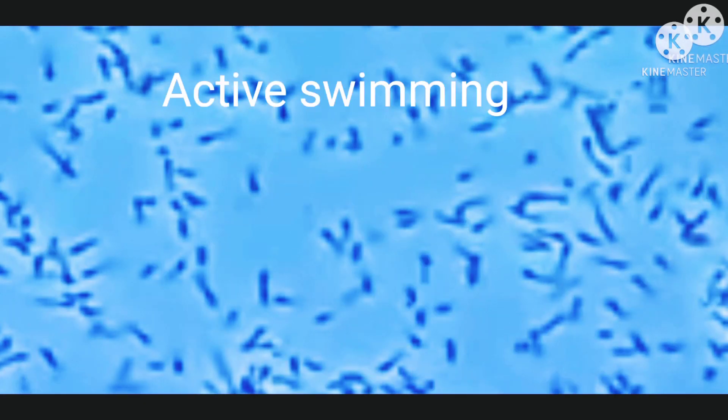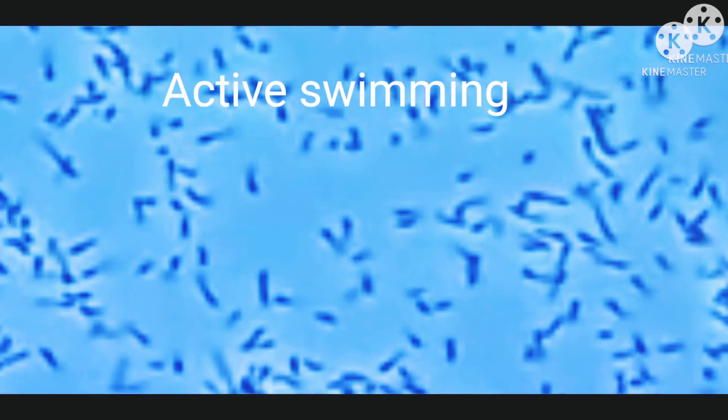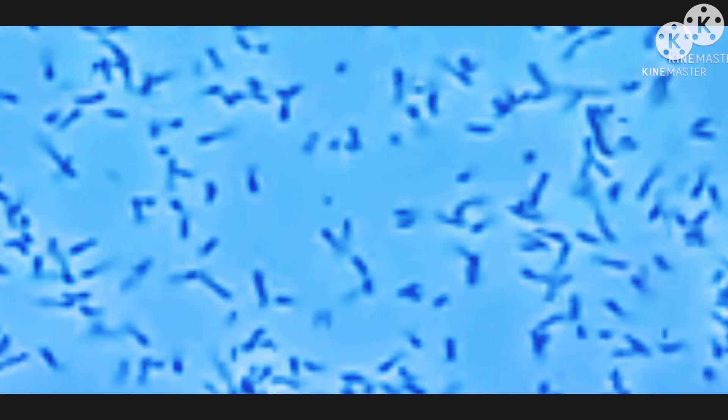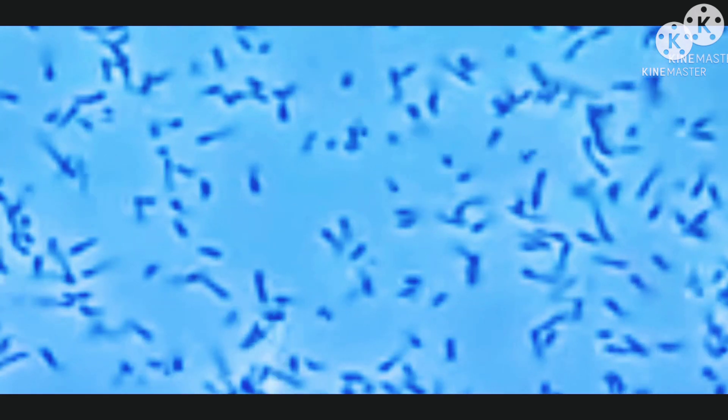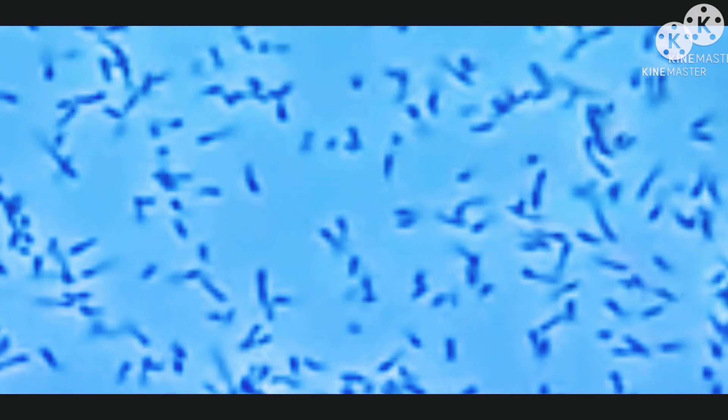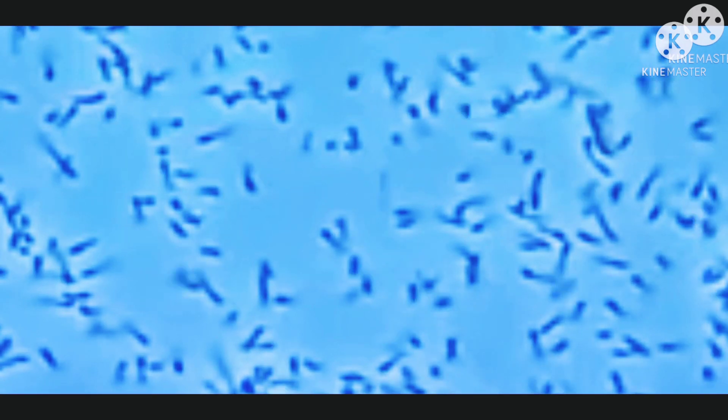Now let me discuss the types of motility seen in microbes. First is active swimming, which is a kind of motility seen in most peritrichous bacteria like E. coli, Salmonella, etc. They move around actively in different directions; the speed is average, so it is not very difficult for our eyes to follow a bacterium.